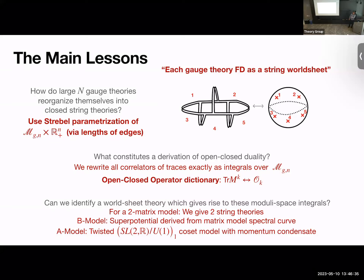Q: By momentum condensate, do you mean a literally homogeneous solution? A: Yes. Q: Why doesn't the A-model side depend on the matrix model? A: It does — depending on which matrix model you have, you turn on different condensates, giving VEVs to different operators. The background you turn on, its inhomogeneity, depends on the matrix model.